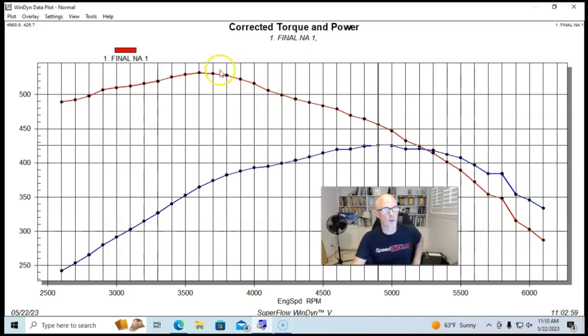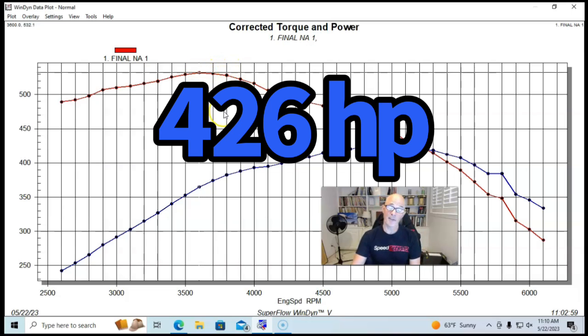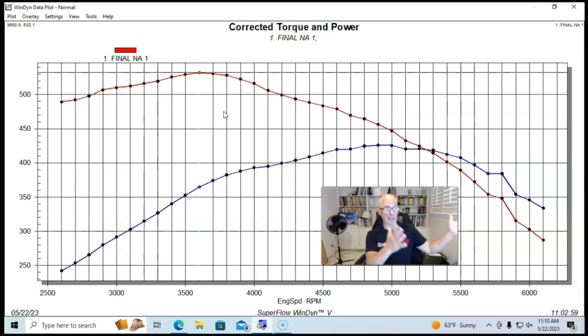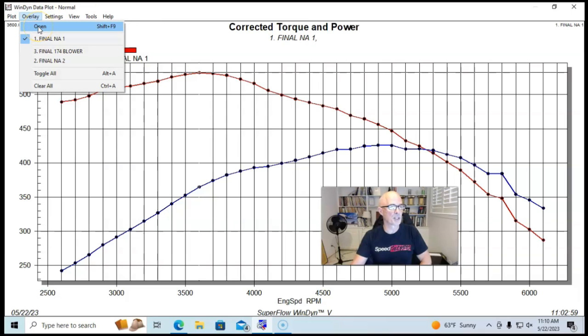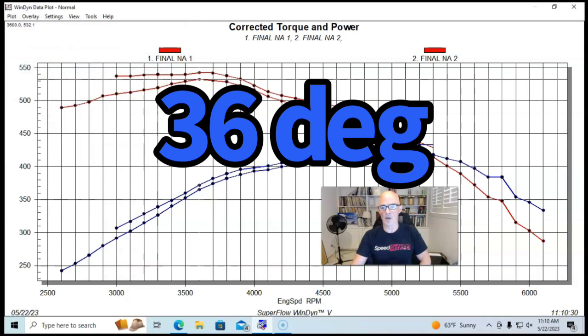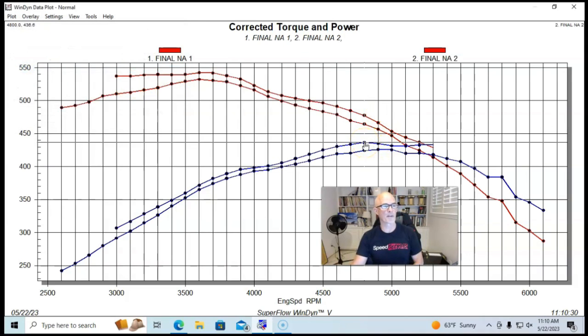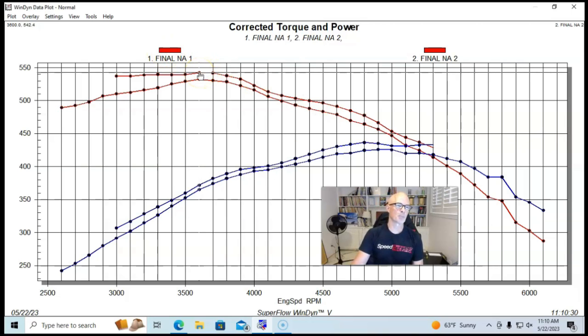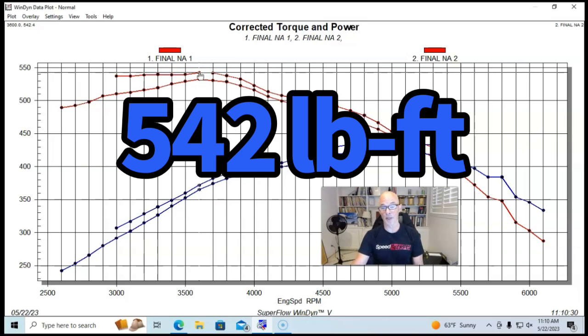It made 426 horsepower and 532 foot-pounds of torque. Honestly, I was pretty happy with the torque down low. I had over 500 for a good bit, so that's kind of where we wanted it. Then we did a little bit more tuning on it. We readjusted the valves after making some power pulls and also added a couple of degrees of timing.